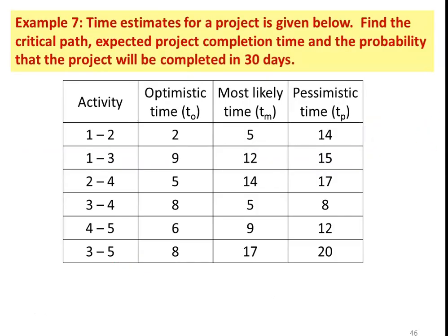So, we take example number 7. The time estimate for a project is given below. Find the critical path, expected project completion time, and the probability that the project will be completed in 30 days.